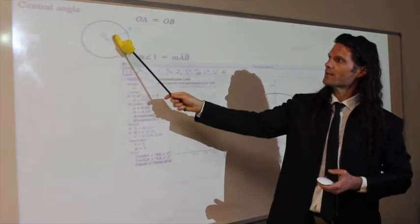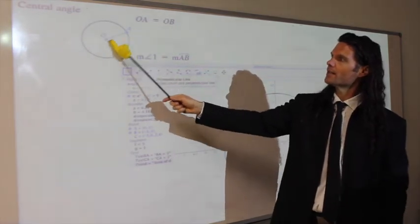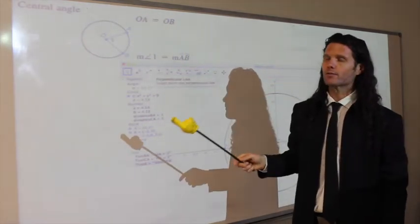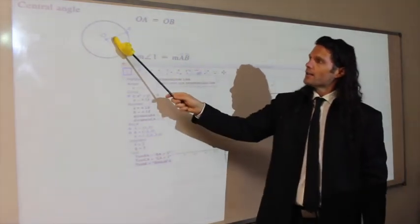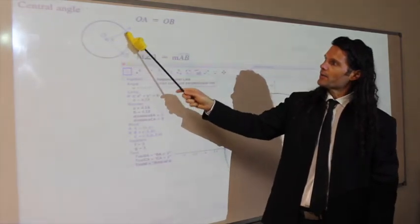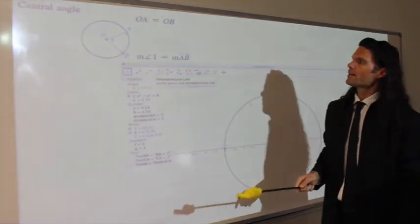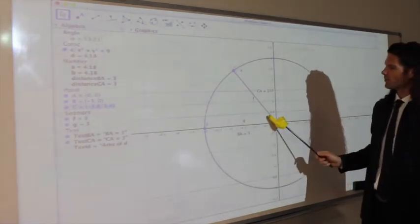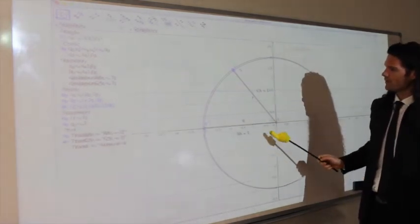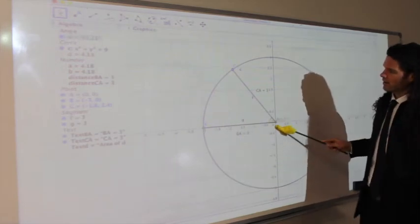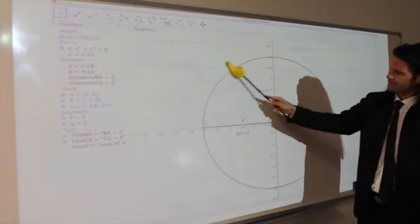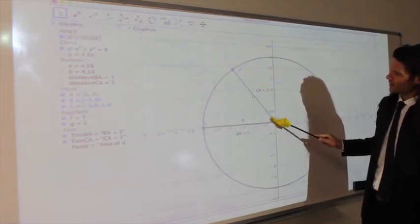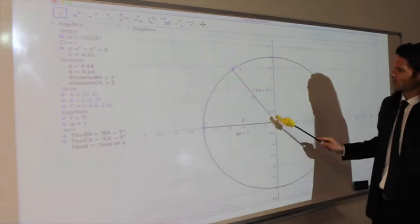The first one is central angle, where we have an angle made by the joining of two radii here. Obviously the radii are equal - that's the definition of radius. This central angle is equal to the arc length M AB, the measure of AB. That one's fairly intuitive because we've got our sector here, this piece of the pie, the angle created by these two radii meeting at the center of the circle.